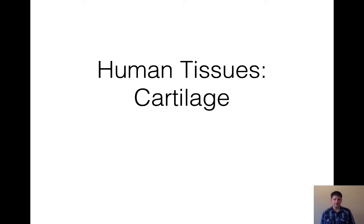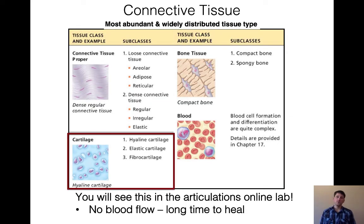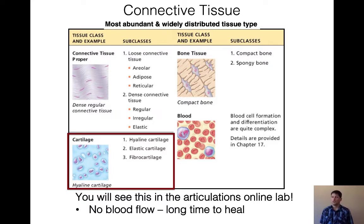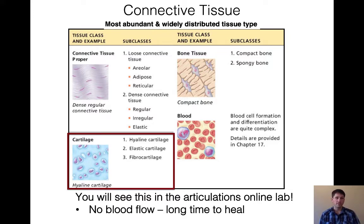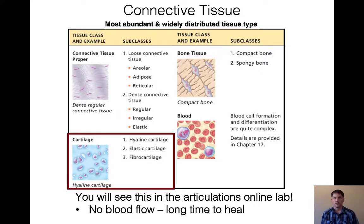Next is cartilage. We're going to look at three types. You'll be looking at these in the articulations lab — slides are available online. An important characteristic: there is no blood flow into cartilage, so it takes a long time to heal. It has to rely on diffusion from underlying layers to bring in nutrients and remove waste.